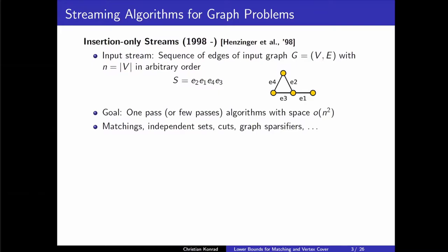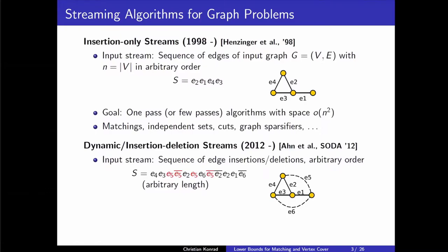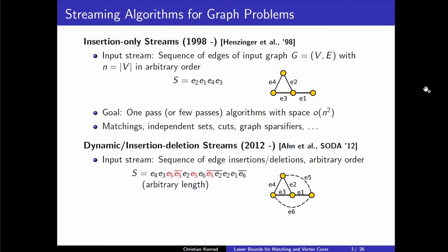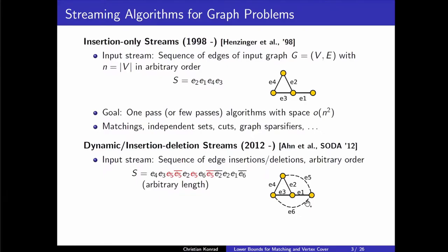What this talk is more about is the insertion-deletion model. We not only have edge insertions but also edge deletions. The input sequence contains both edges being inserted and deleted. For example, E5 might be inserted and deleted, then inserted again and deleted again. Having these deletions means the input stream can be arbitrarily long — you can play the game of inserting and deleting edges over and over again.